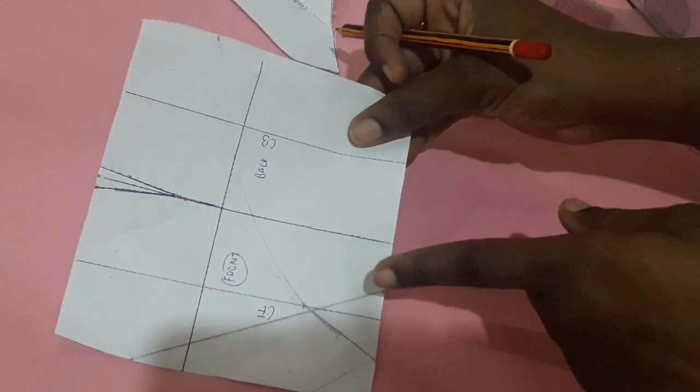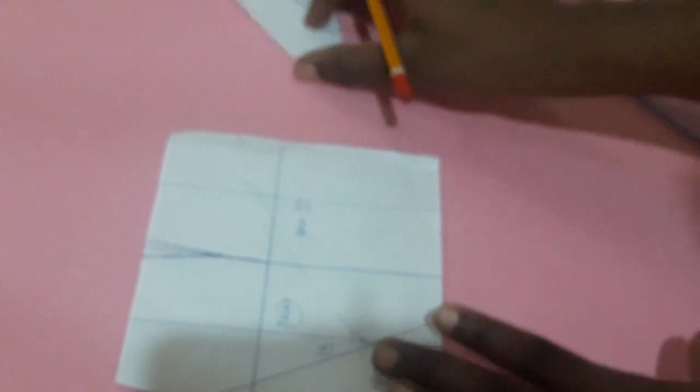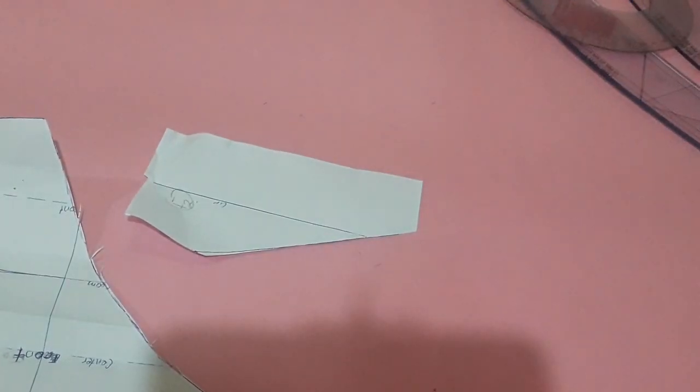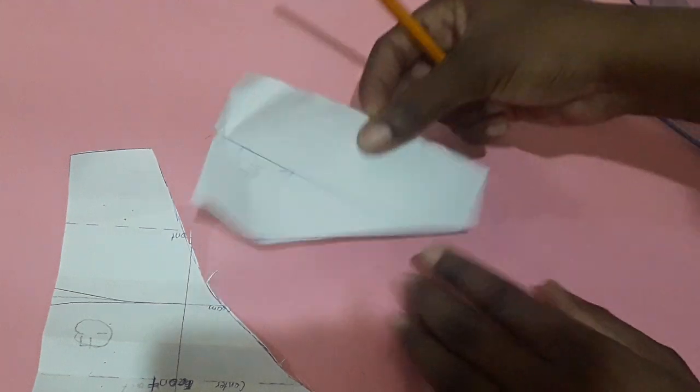So this is it. So we have two patterns. So this is all you do on this pattern. I'm going to trace out - this is your master pattern, you don't cut this, you trace out. So I have my traced out patterns.